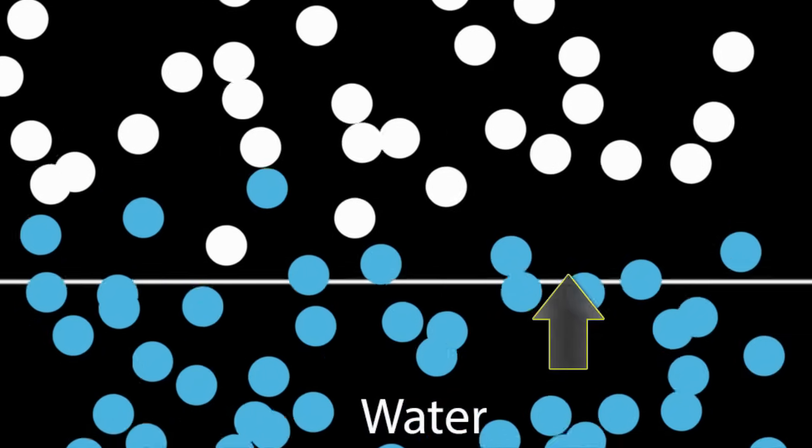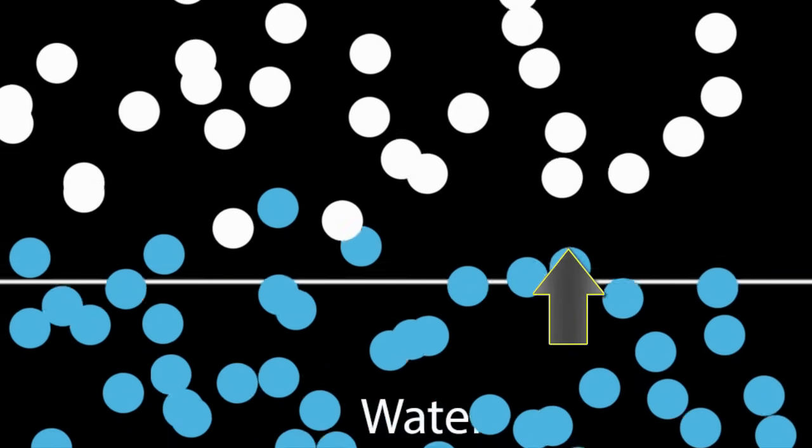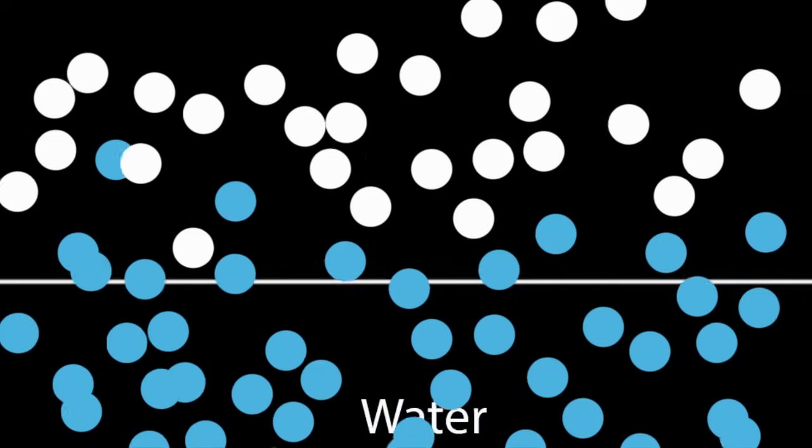But water molecules can create pressure when they leave the liquid. As these faster-moving water molecules escape, they collide with the molecules of air. This creates pressure, and we call it vapor pressure.